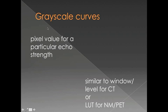The other thing to think about is a grayscale curve, and what this is is how the pixel values are applied along that set of compressed echoes that we talked about. These are similar to things like window level for CT or lookup tables for nuclear medicine and PET.